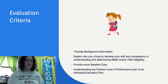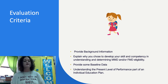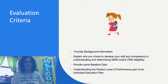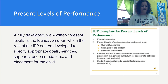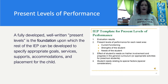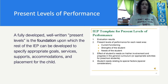You also have to describe the behavior specifically in objective, measurable terms, meaning you need to give baseline data. You have to include factors that have led to success — those are the strengths — as well as weaknesses, things the child might struggle with or have difficulty on. And you need to describe the current educational needs in relation to their annual goals.